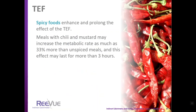Spicy foods enhance and prolong the thermic effect of food. Meals with chili and mustard may increase metabolic rate as much as 33% more than unspiced meals, and this effect may last more than 3 hours. But this is short-lived and represents a small number of calories — if your RMR is 1,200 calories, a 33% increase over 3 hours gives you only an additional 50 calories per day.